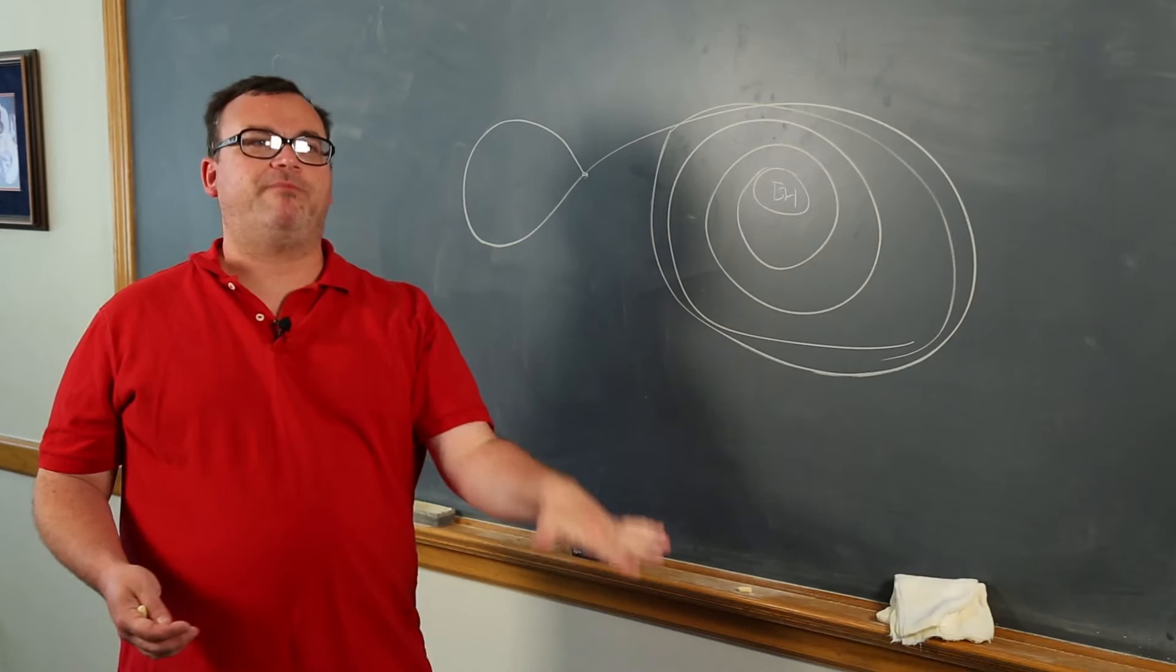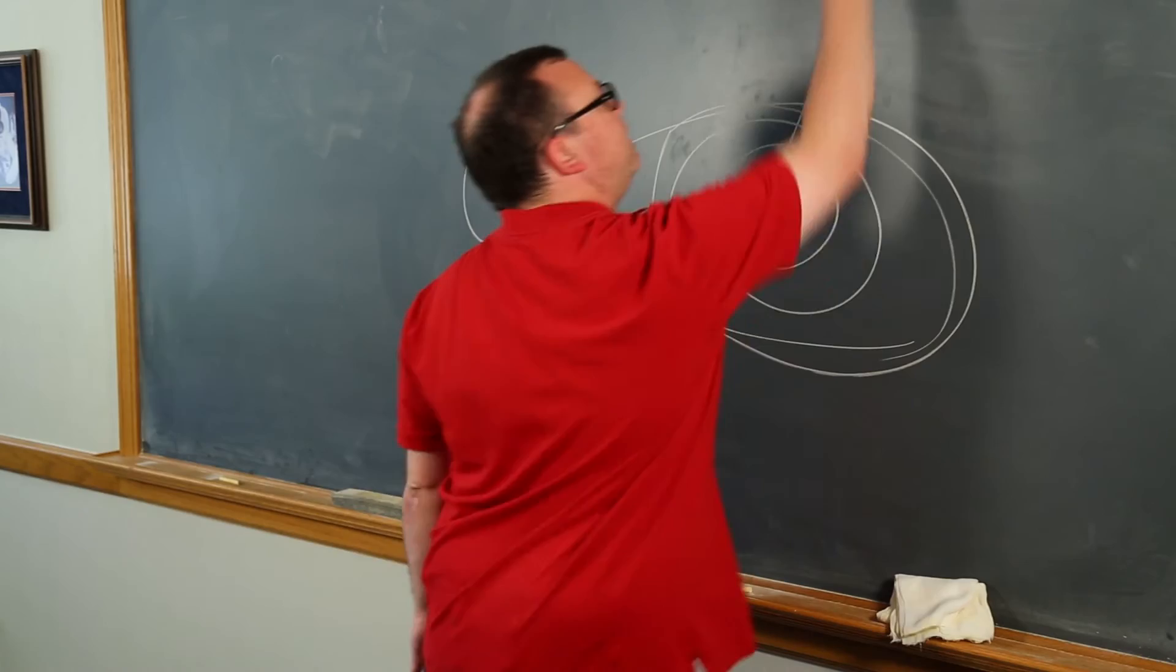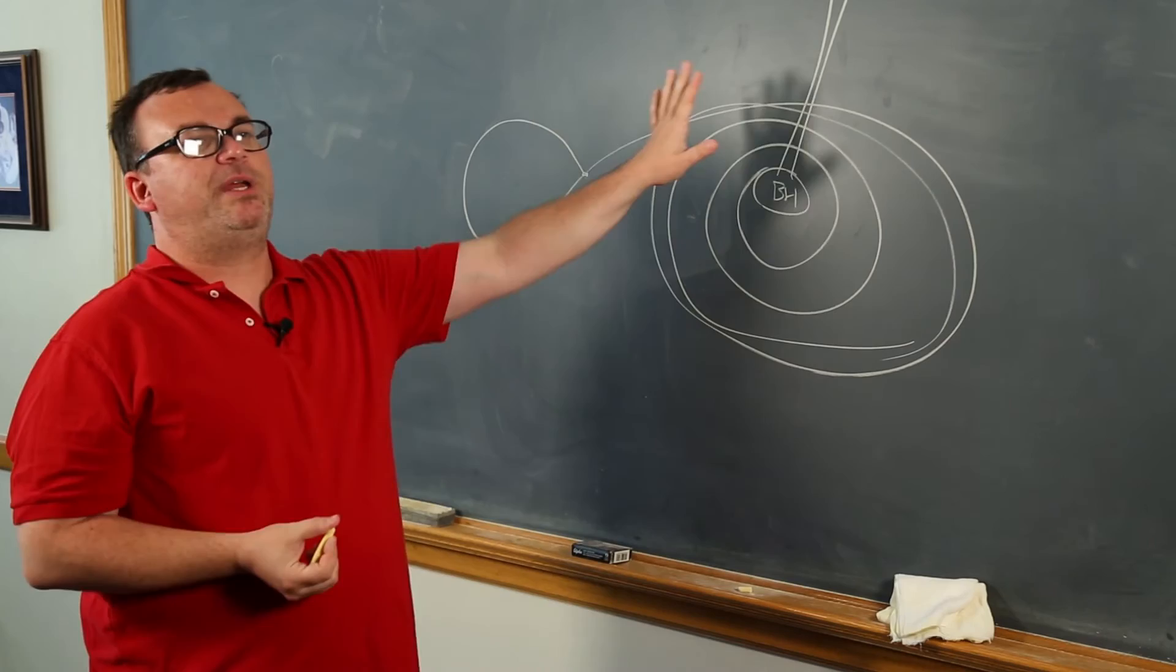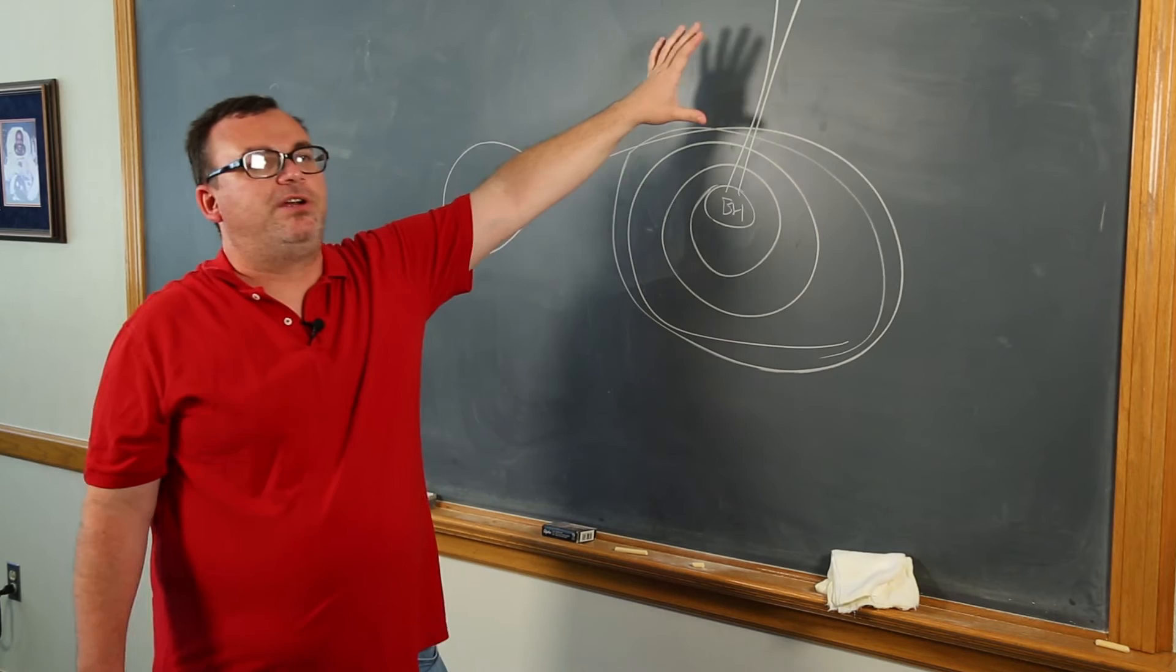Now it turns out that at the same time this black hole is taking in material, a small amount of the material ends up getting expelled. And this material gets expelled in what we call a jet. And this jet can give off radio emission. And one of the things that we've discovered over the past several decades of looking at these kinds of objects is that the radio emission from the jet gets fainter more slowly than the x-ray emission gets fainter.